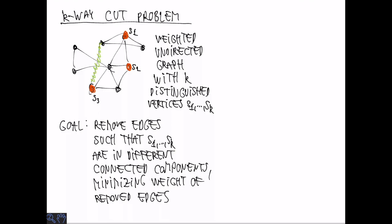We want to minimize the weight of the removed edges. In the example, we could remove these five edges and the three distinguished vertices would be disconnected.